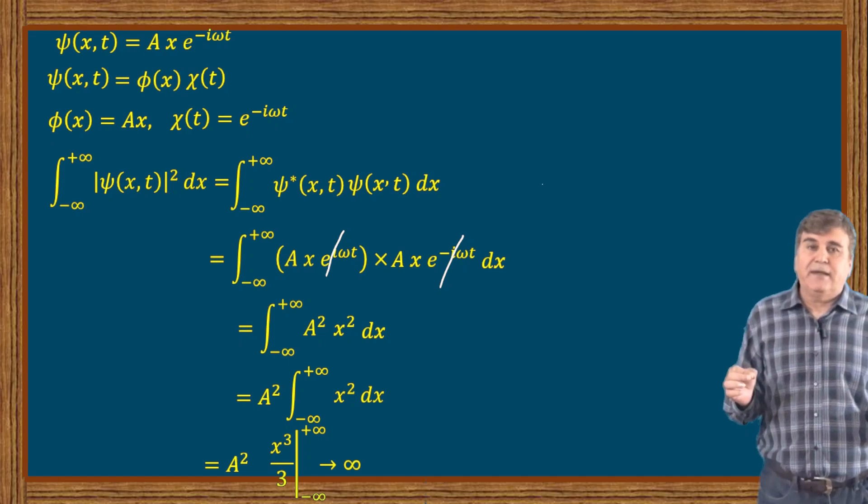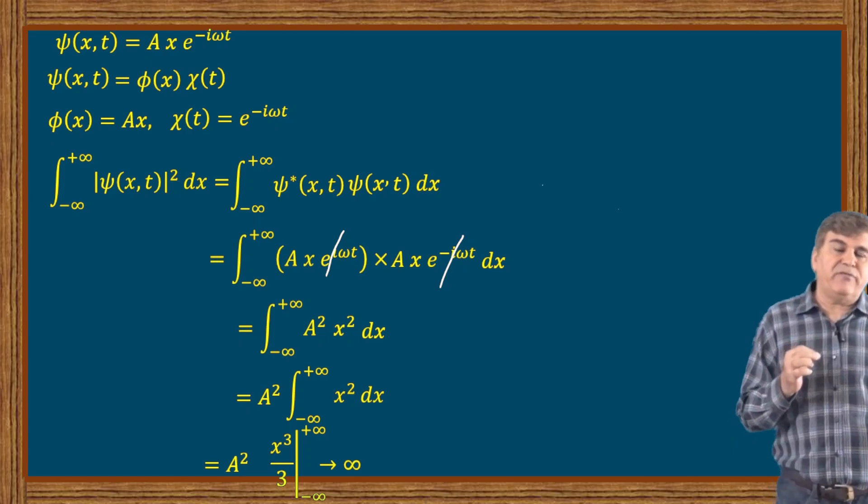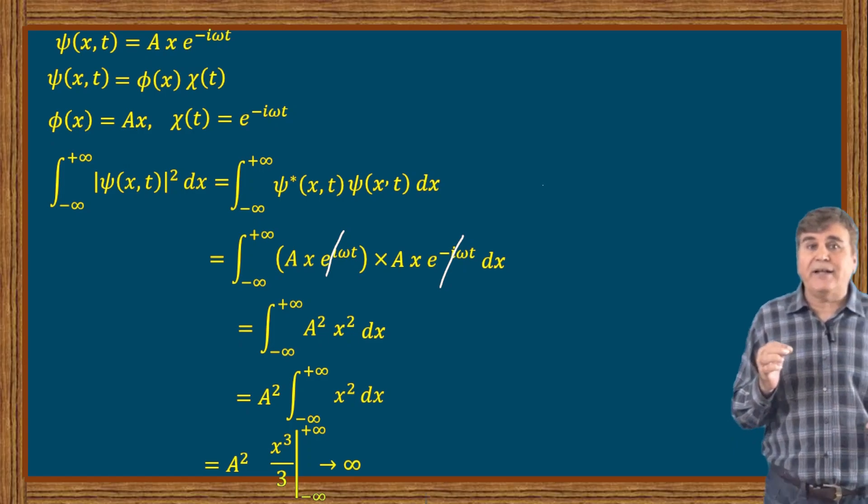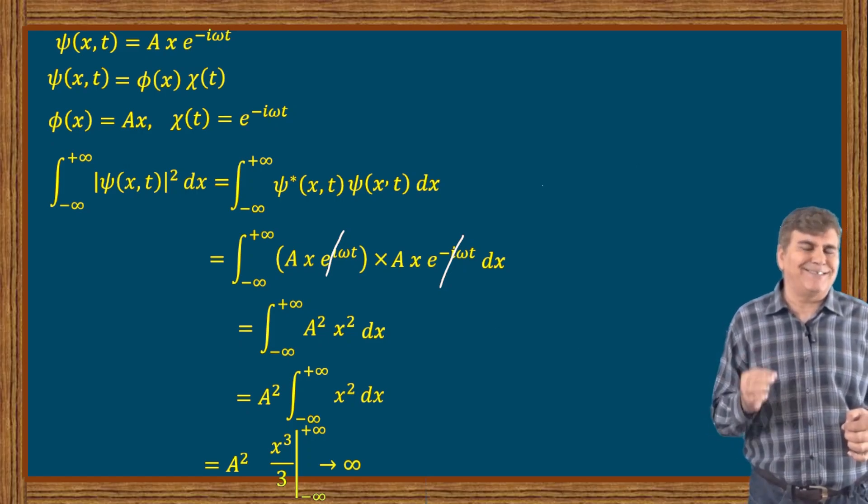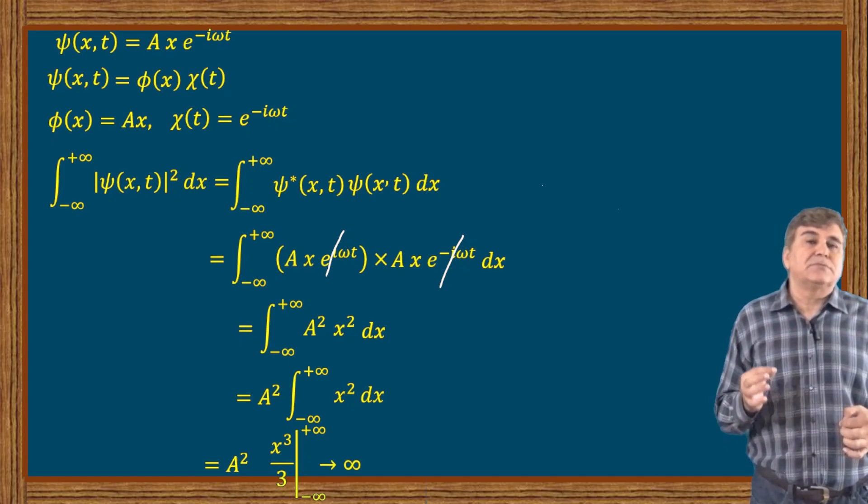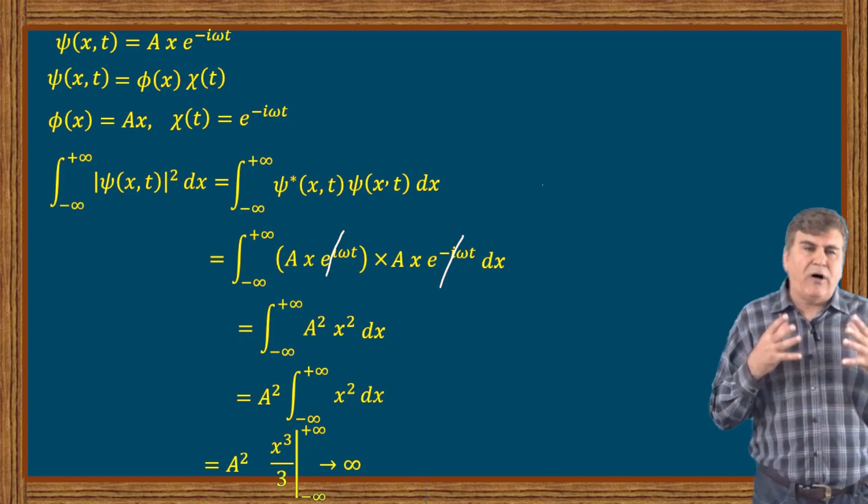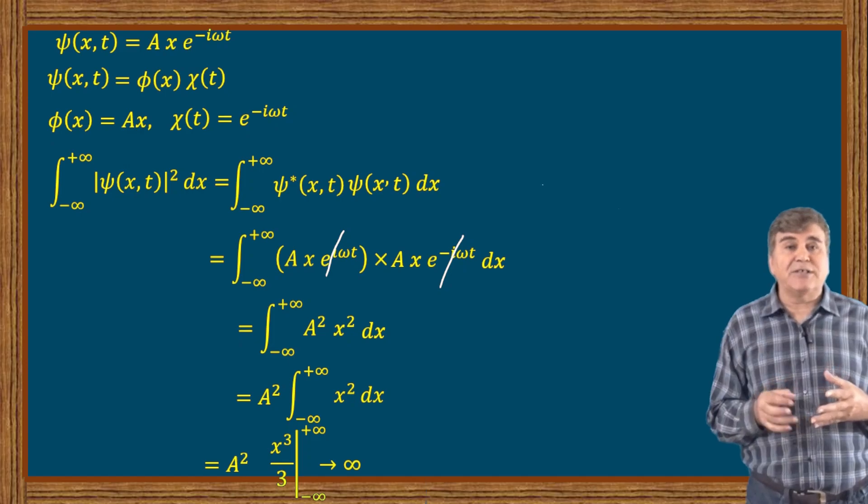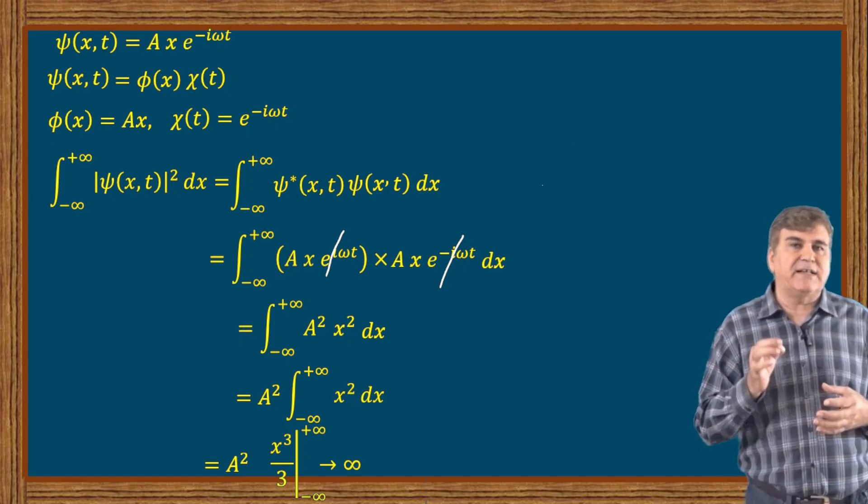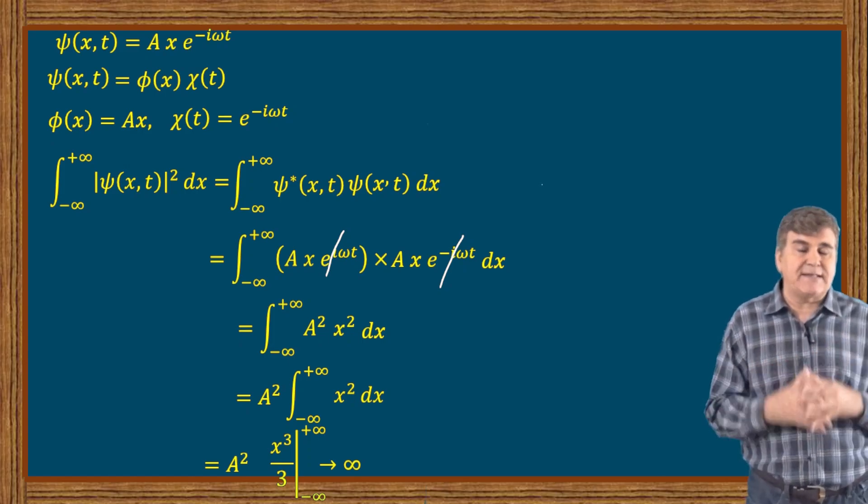So if you are given a wave function, you first need to check whether the given wave function is physically valid or not. For validity, you need to check whether the function is continuous, single-valued, finite, and square integrable. If all these four conditions are satisfied simultaneously by a wave function, only then is it a physically valid function. Otherwise, it is just a function that is not physical.